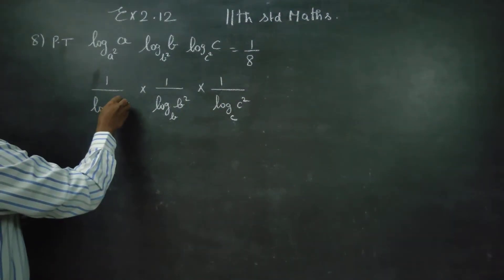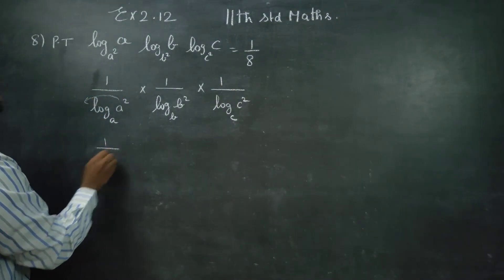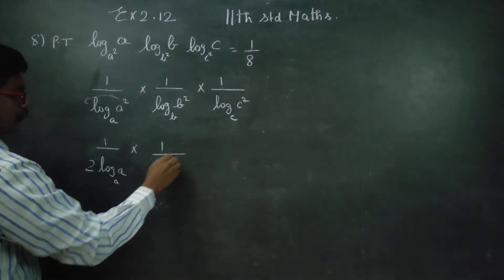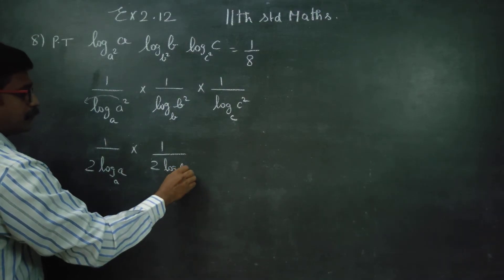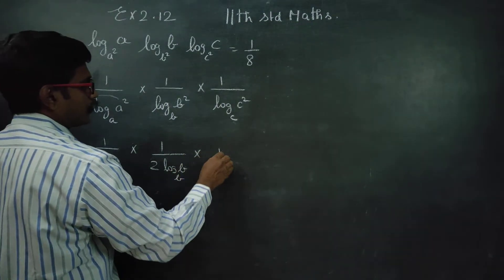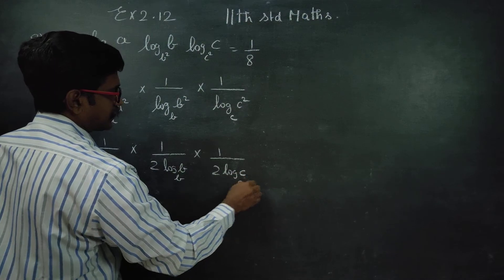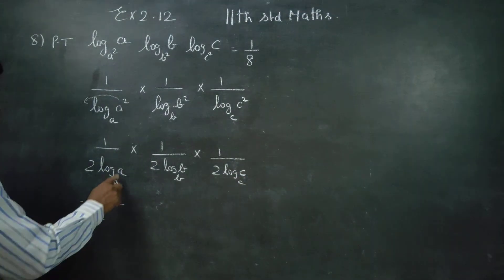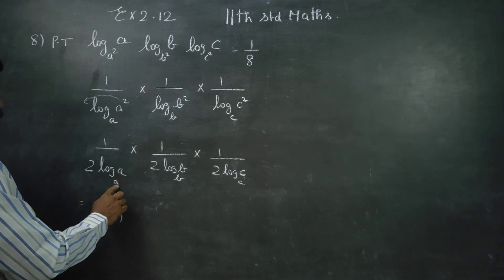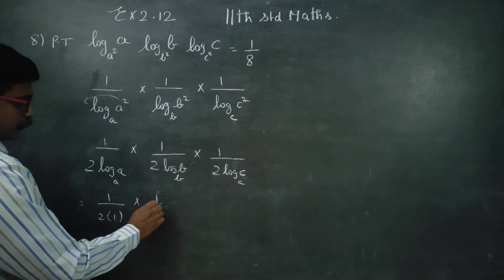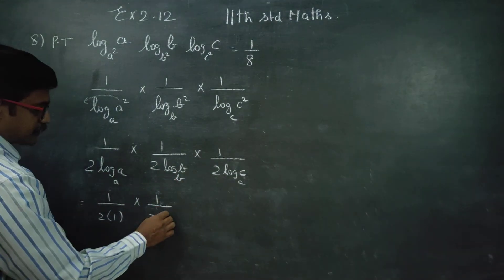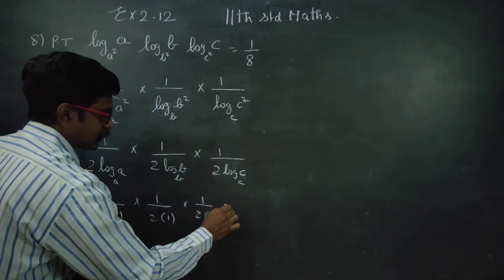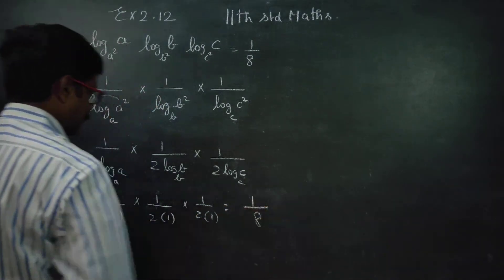This gives us 1 by 2 log A base A, into 1 by 2 log B base B, into 1 by 2 log C base C. Fine. 1 by 2, same answer — 1 by 1 by 2, same answer 1 by 1. 1 by 2, base number log C gives answer 1, into 1 by 2, base number log C gives answer 1. Your answer is 1 by 8.